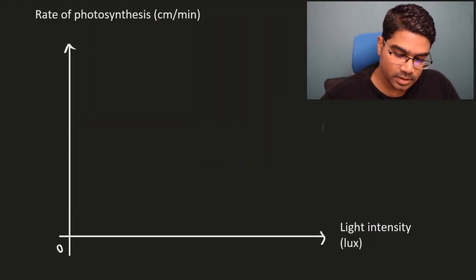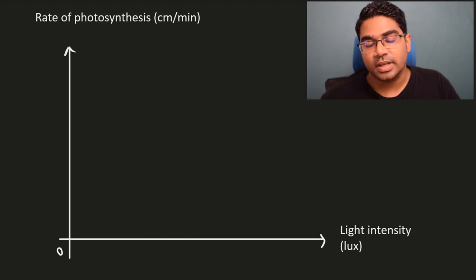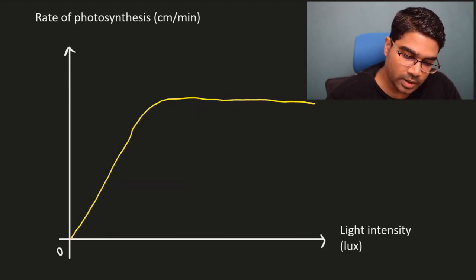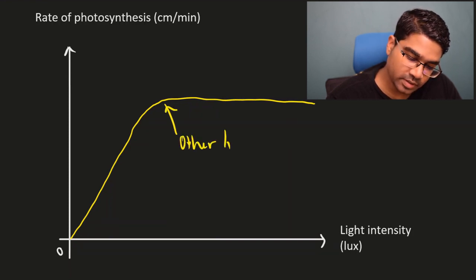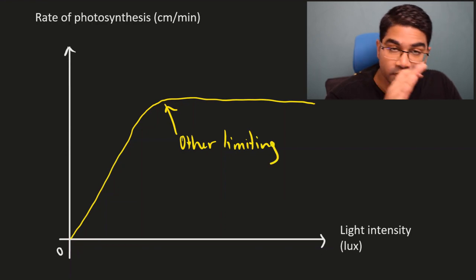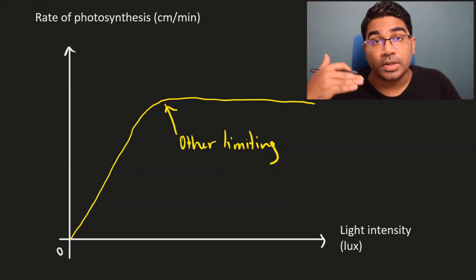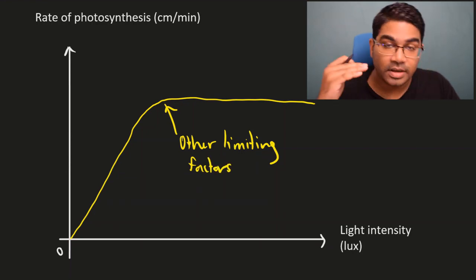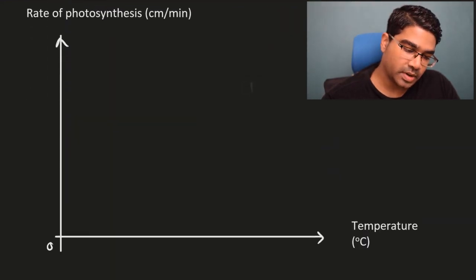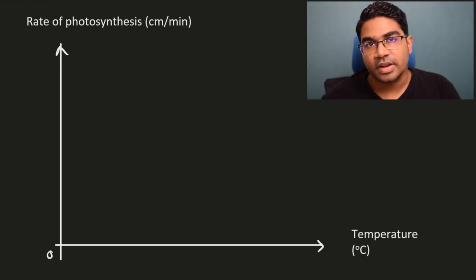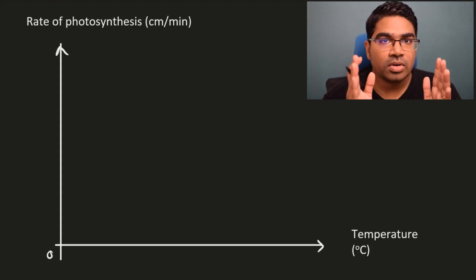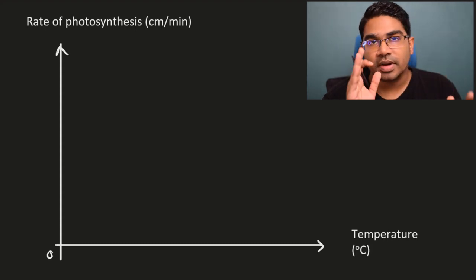Temperature is a bit different. Since photosynthesis is a biochemical reaction catalyzed by enzymes, and enzymes are temperature sensitive, they function optimally at 25 to 30 degrees Celsius. At very low temperatures, the frequency of collision between enzyme and substrate molecules is low, so the rate of reaction is low. As temperature rises, the frequency of effective collisions increases, causing the rate of reaction to increase — rising from around 5°C up to a peak between 25 and 30°C.